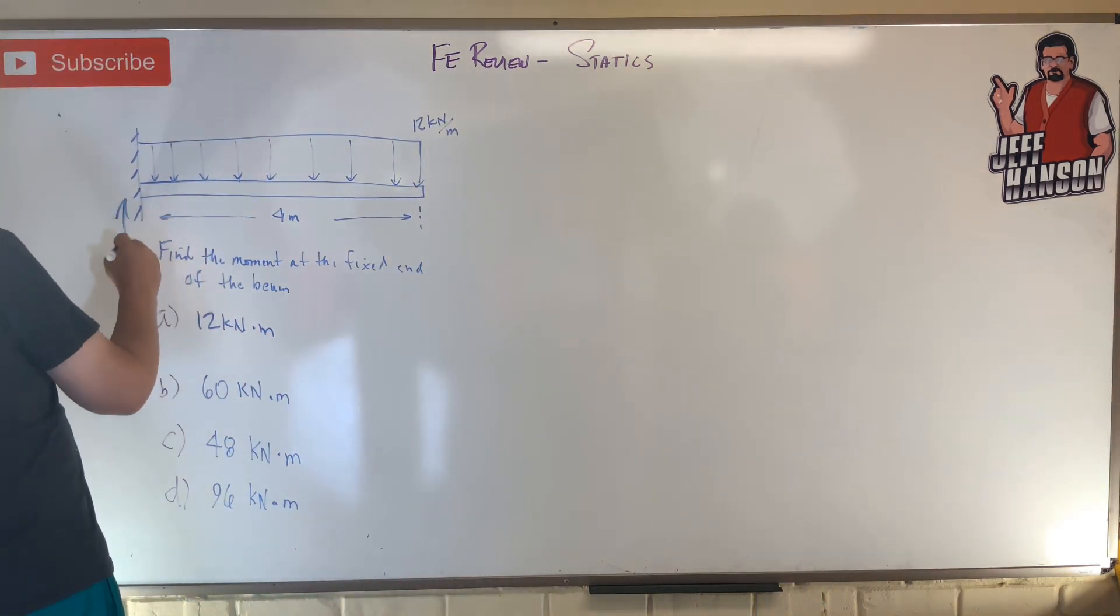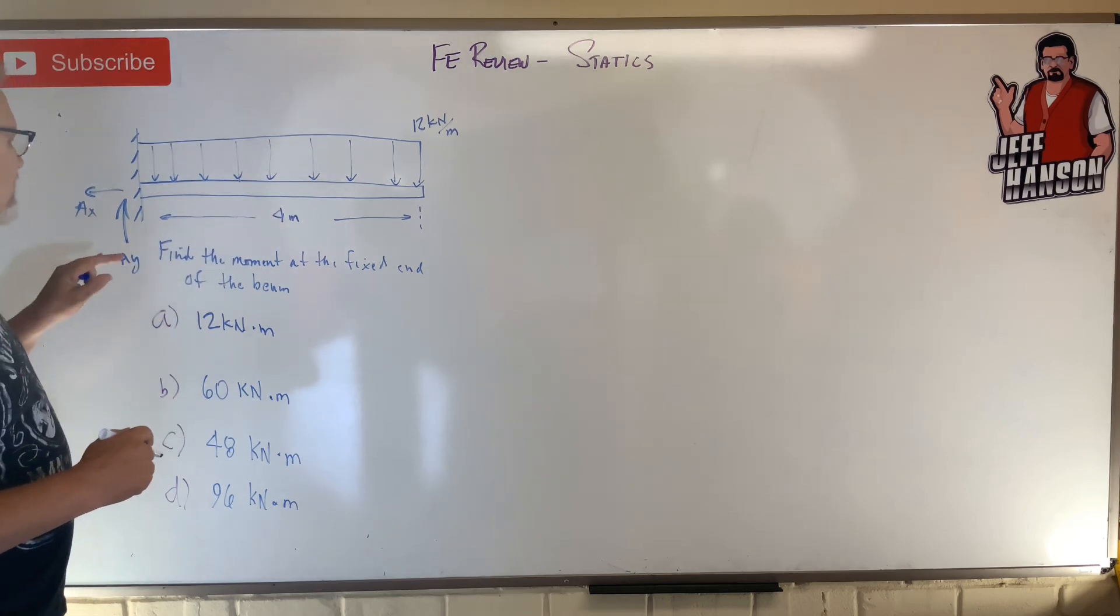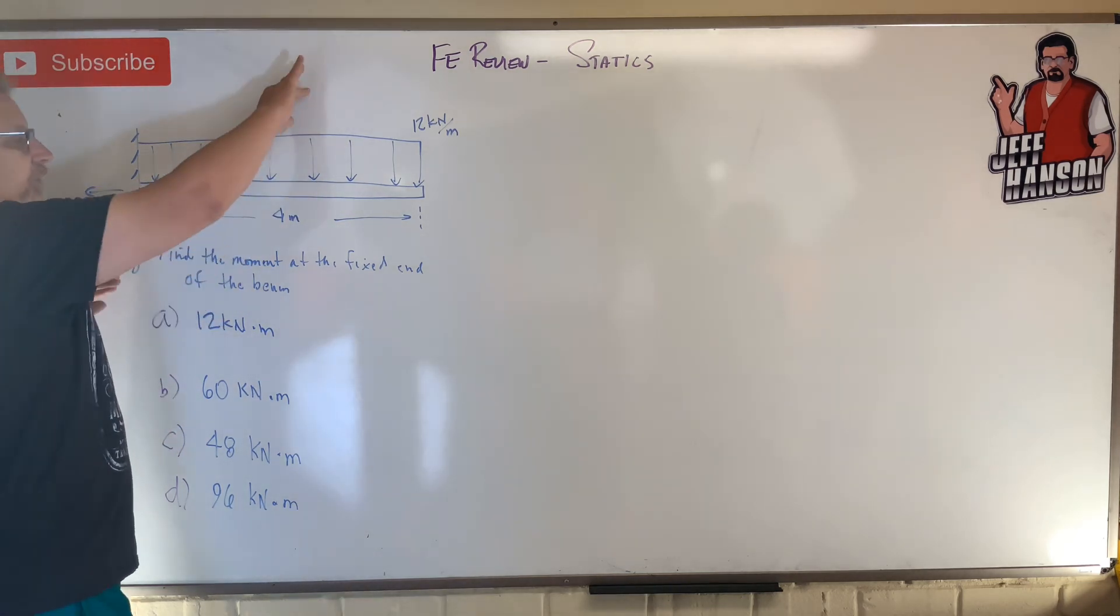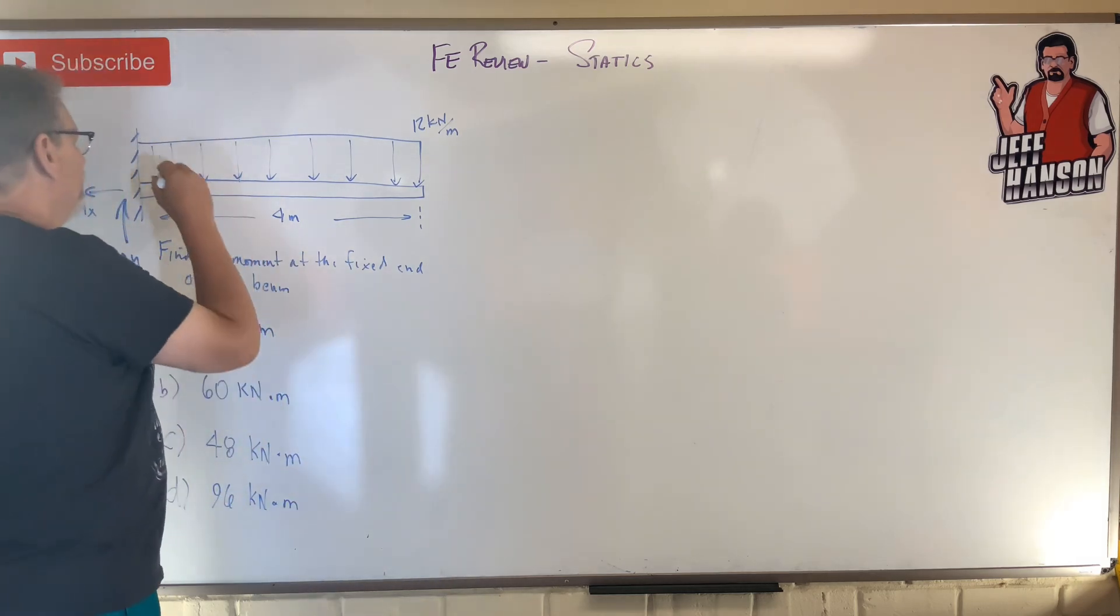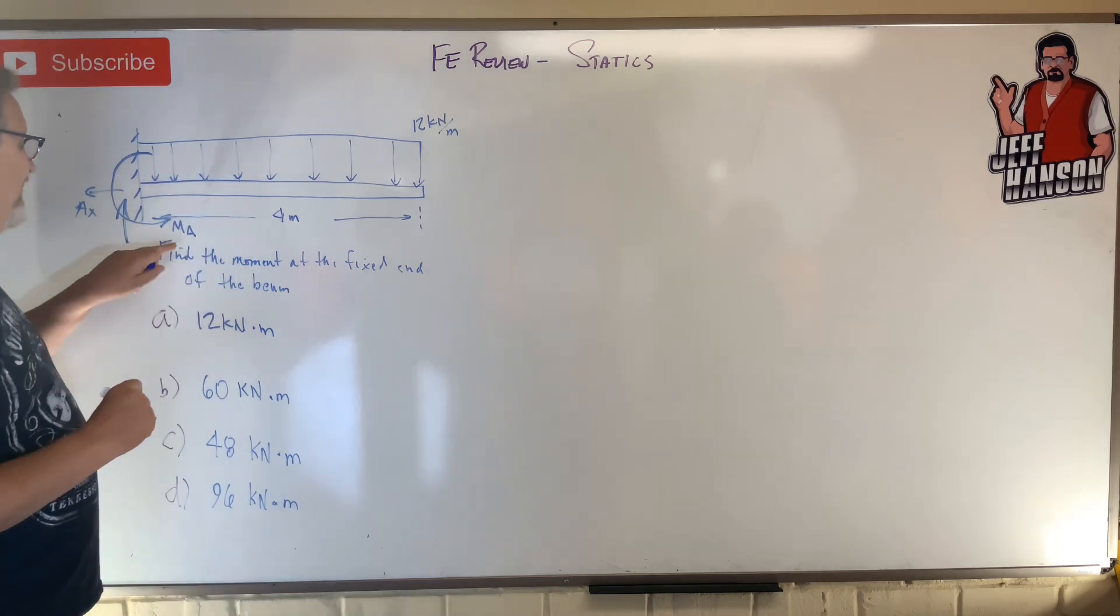There is an x, although we don't have any x forces in this problem. X is going to be equal to zero. But then there is also this whole thing wants to rotate this way, so the wall says I got you and rotates in the opposite direction. And there is the moment, that's what we're after, ma.